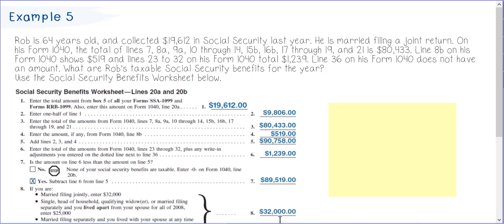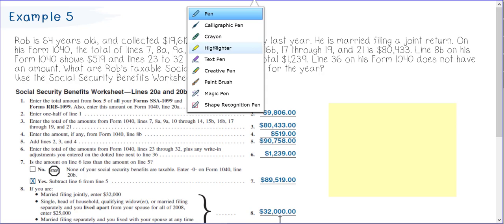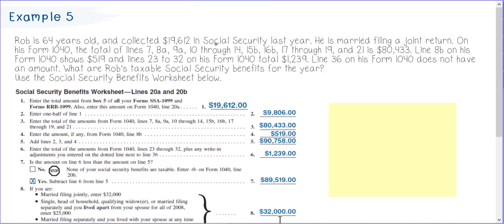In this example, Rob is 64 years old and collected $19,612 in Social Security benefits. Using the Social Security benefits worksheet, that is going to be entered into line 1.